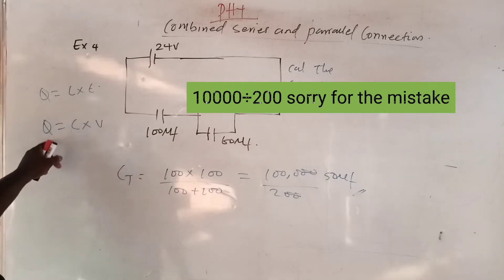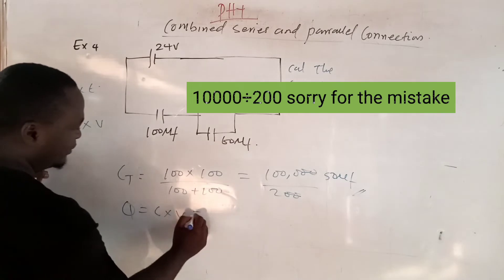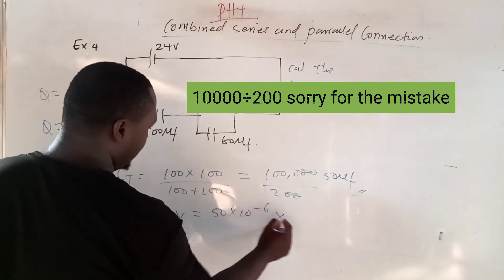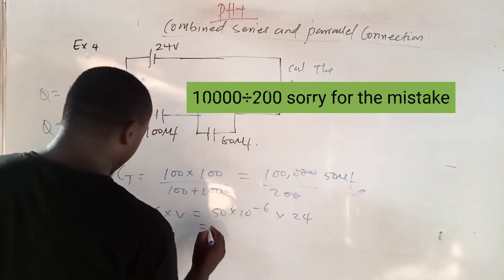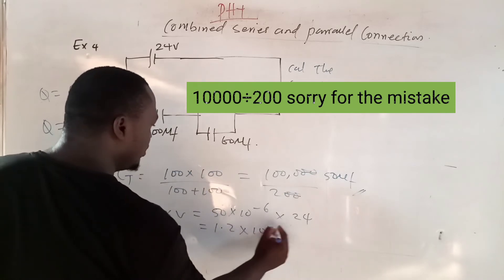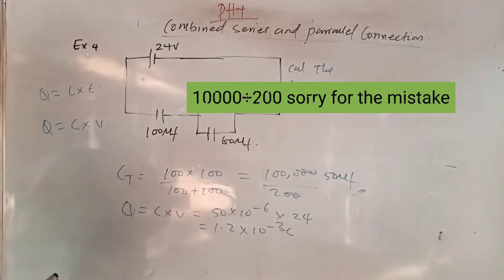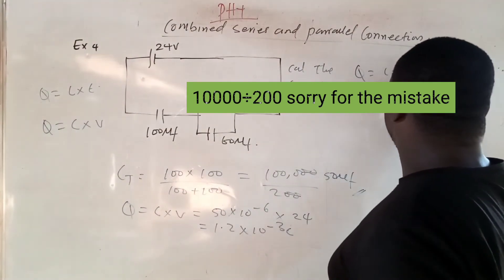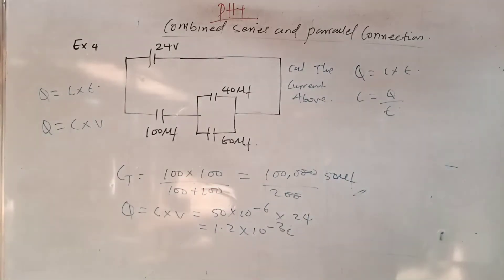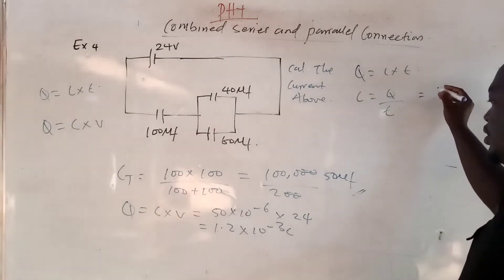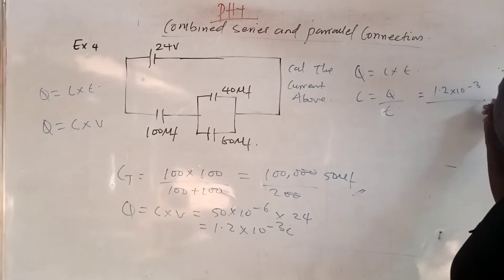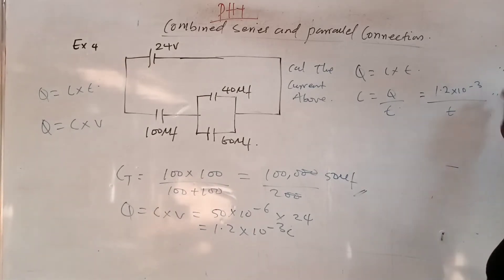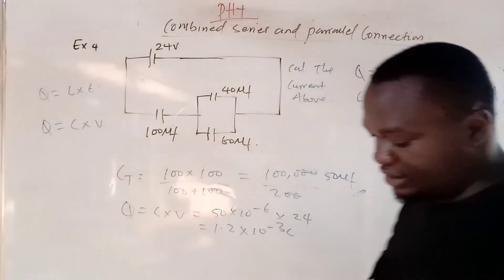The next thing is to get the charge: Q = C × V. We have the voltage, so Q = 50 microfarad × 24 V, which gives 1.2 × 10⁻³ coulombs. They asked for current, not charge. From Q = I × T, current I = Q / T. The problem is they did not give us T, so your answer is 1.2 × 10⁻³ / T amperes. If you forget to include T in this question, you have failed it. The SI unit of current is ampere.